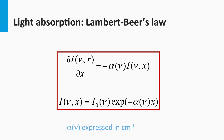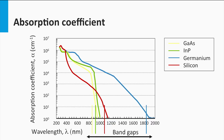It is important to realize that the absorption coefficient for materials is not the same at every wavelength. In this figure, the absorption coefficients for four different semiconductor materials are plotted: germanium, silicon, gallium arsenide, and indium phosphide. Germanium has the lowest band gap and starts to absorb at high wavelengths, which means low photon energy. Gallium arsenide has the highest band gap, as it starts to absorb light at the smallest wavelength, or the highest photon energy.